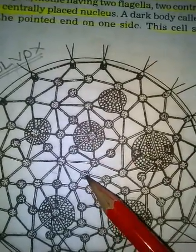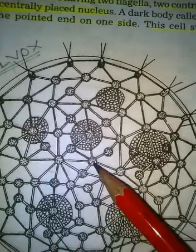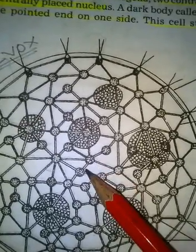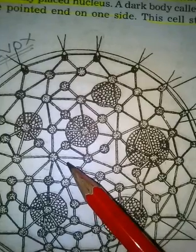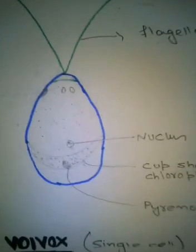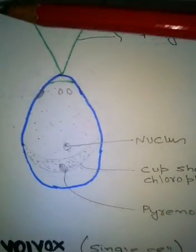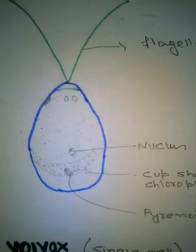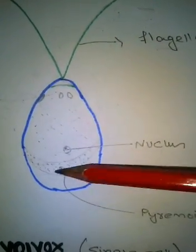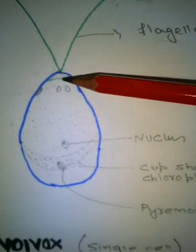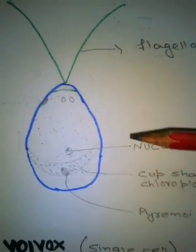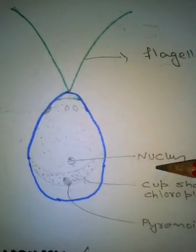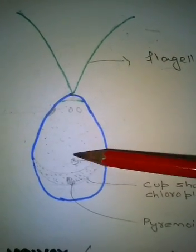The vegetative cells vary from 500 to 60,000. These cells are attached to each other by cytoplasmic structures. In the single cell structure of Volvox, it is broad at the posterior end and narrow at the anterior end. It consists of a single nucleus placed at the center.